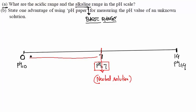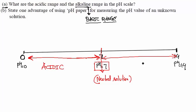If you are moving from 7 towards 0, then your solution becomes more and more acidic — so that region is the acidic range. And from 7 onwards up to 14, the solution is basic, or you can say alkaline.